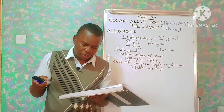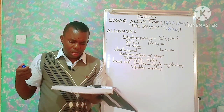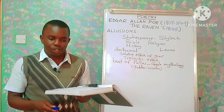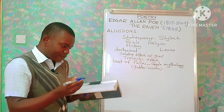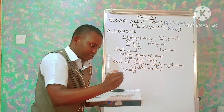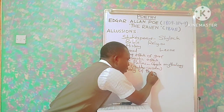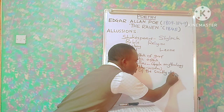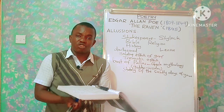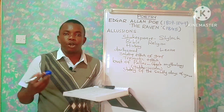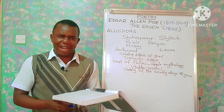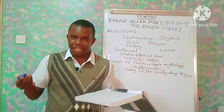In stanza seven, the first line reads: 'In there stepped a stately raven of the saintly days of yore.' The raven has been described as stately — something majestic — and is of the saintly days of yore. 'Days of yore' simply means days of long ago. What this brings to our mind is the raven that fed Elijah from the Bible, so here there is a biblical allusion.